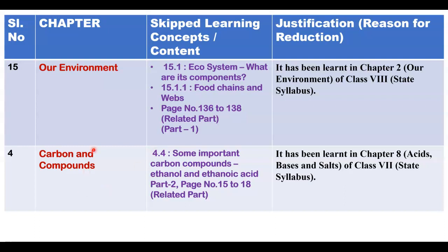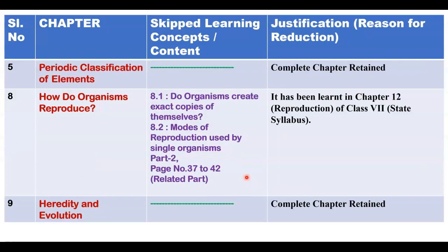Next, Carbon and Its Compounds — section 4.4, Some Important Carbon Compounds, specifically Ethanol and Ethanoic Acid, has been deleted. This is Part 2, page number 15 to 18 and the related part. The chapter Periodic Classification of Elements is fully retained — you want to study this full chapter.